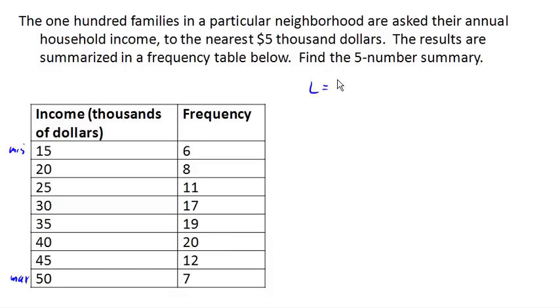So for quartile 1, our locator will be 25% of our data. We have 100 pieces of data is 25. And since that's a whole number, we know we need to go between the 25th and 26th data values.